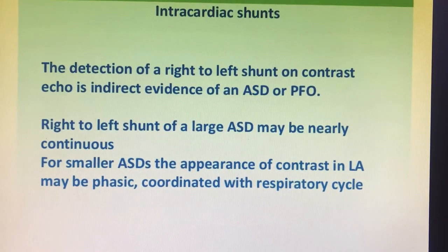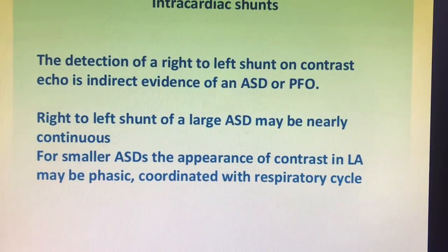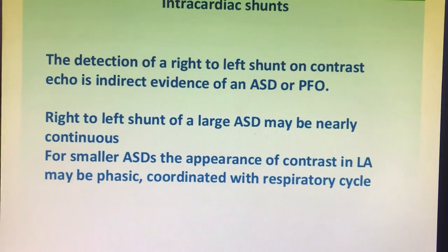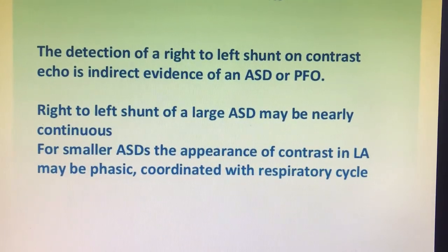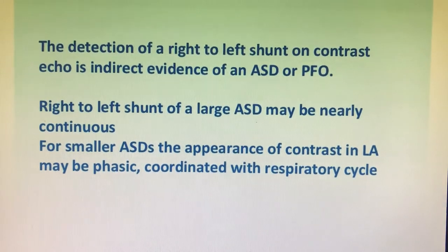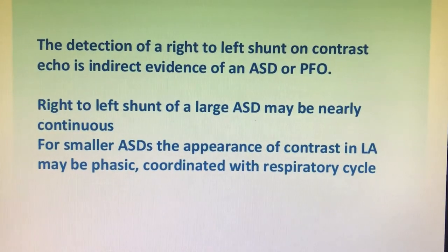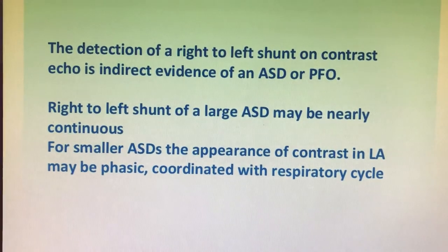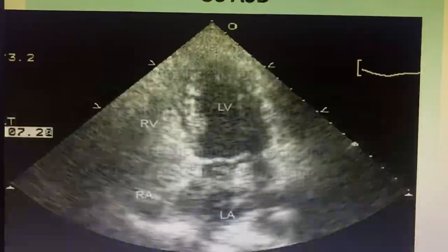For intra-cardiac shunts, contrast echo can usually provide evidence of an ASD or PFO. If there is a large right-to-left shunt, you will get a continuous shunt. For a smaller one, you may get a respiratory response — during inspiration it may go right or left, and during expiration there will be a left or right shunt.